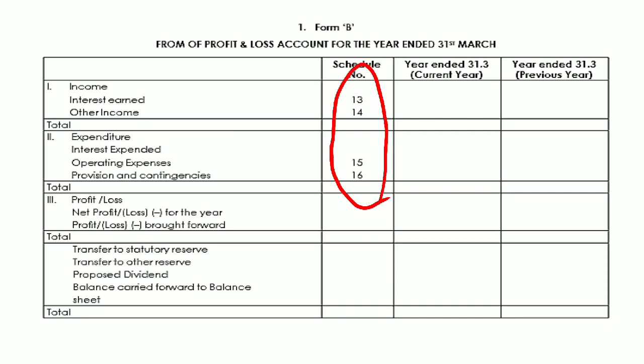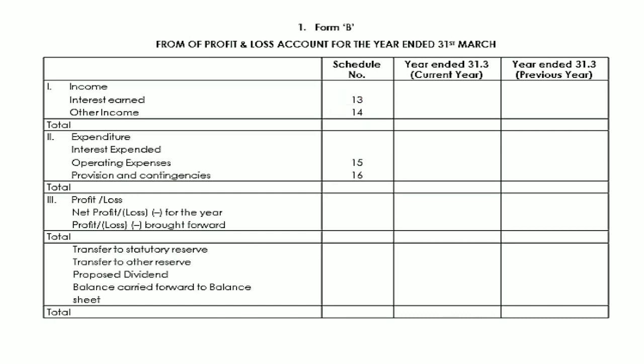The profit and loss account has main items covered under Schedules 13, 14, 15, and 16. The income side includes interest earned, which is Schedule number 13, and other income, which is Schedule number 14. These two income amounts are added together to give the total income.